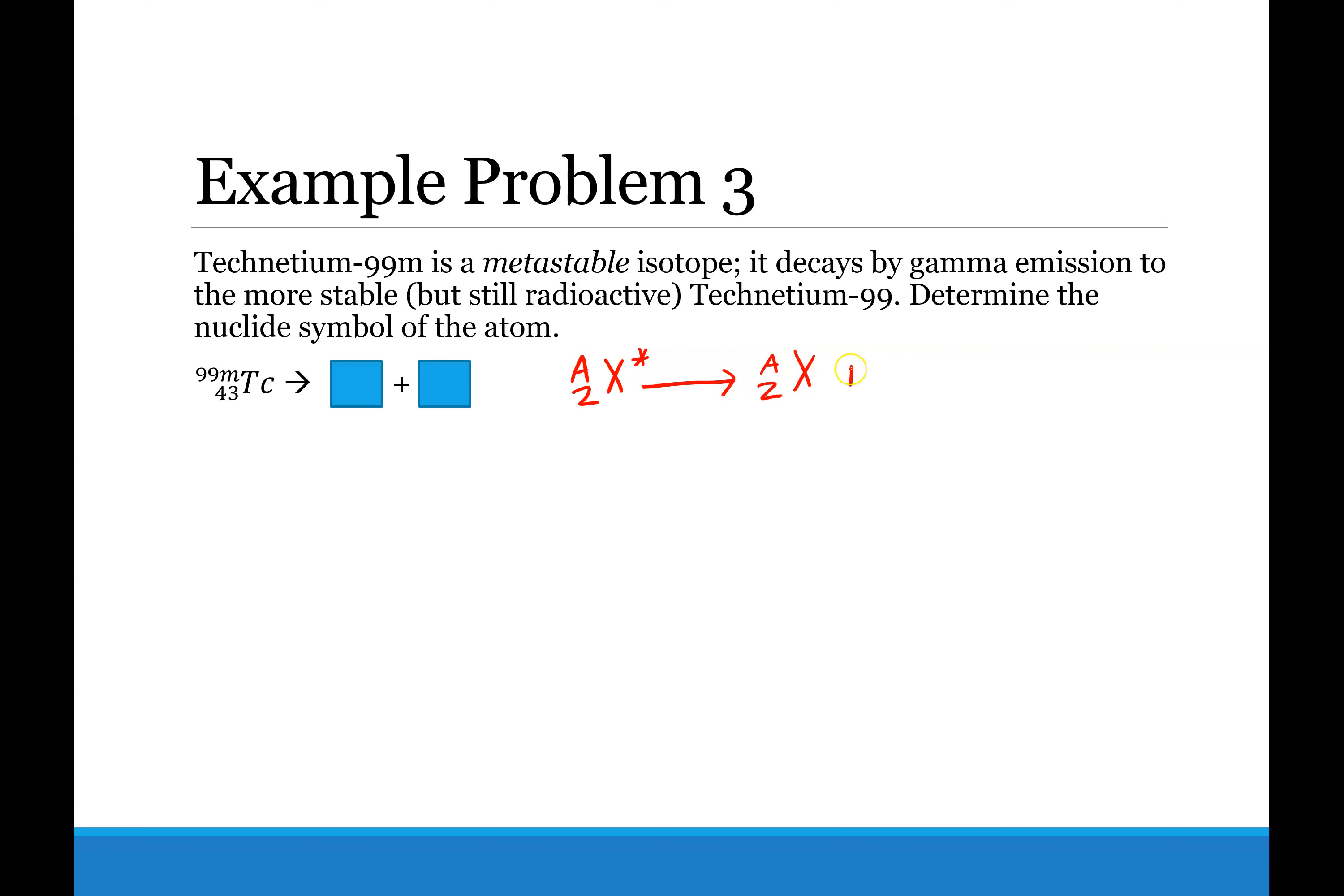And that's it. So working example problem 3, we have 99m Tc-43 technetium. We have the decay happening and then it just goes to Tc-99-43 technetium plus the gamma ray.